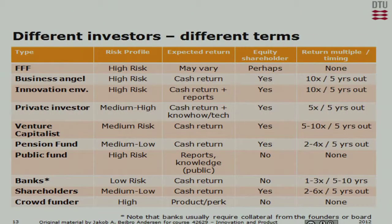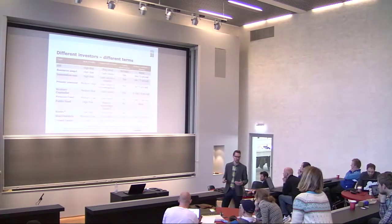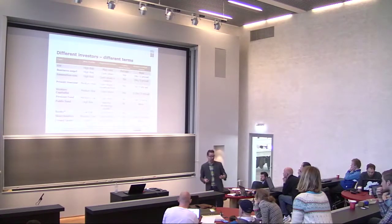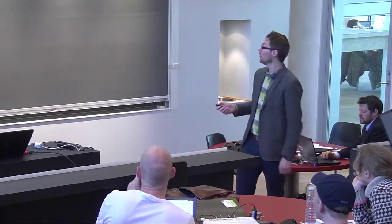To give an overview of investor types, there are basically two categories: those who want a stock of your company and those who don't. Banks don't want stock but want you to pay the money back. Crowdfunders don't want stock but want a service or product in return. Venture capitalists want equity — a stock of your company — and that's how they get their return. Interestingly, the feedback I've received from investors for my own situation is that I should focus more on public funds.